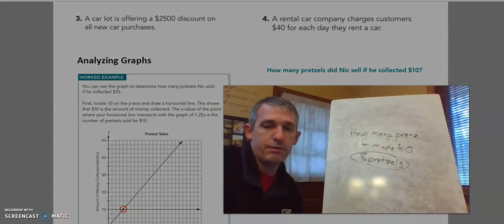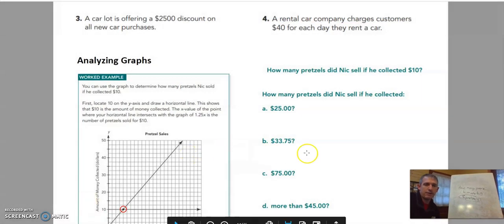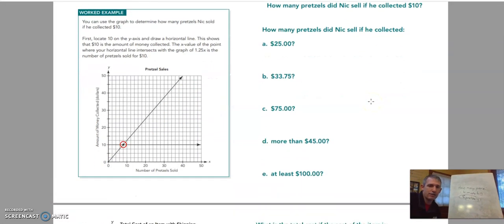Now, we could use the graph for these other ones. How many pretzels did Nick sell if he collected $25? Well, let's see here. I don't want to look on this line because that's the number of pretzels. I'm going to look over here at the money. $25 is halfway between $20 and $30. So I'm looking right here.